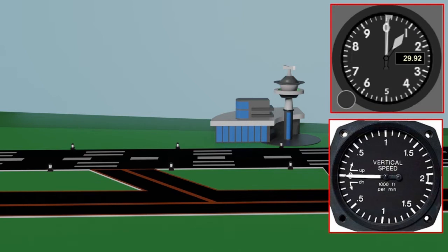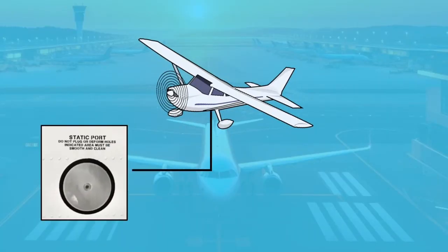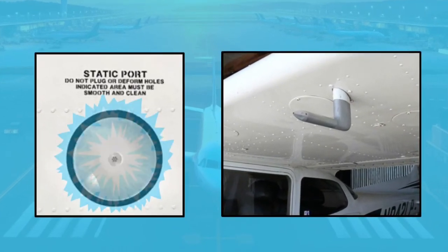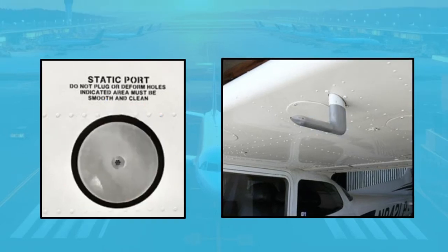When the altimeter is stuck like this, it is likely that the static ports or vents have become clogged or iced up. Check your VSI as well to confirm — if it is also not changing its indication when you climb or descend, then you likely have clogged static ports. When no air is able to get into the static port, the altimeter will never sense any change in static pressure and will therefore continue to indicate the same altitude. The airspeed indicator may look like it's functioning normally because it may still change with changes in pitot pressure, but the indications will be erroneous. Use your alternative static port inside the cabin if this occurs.